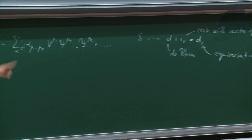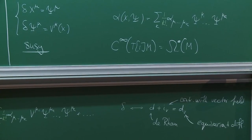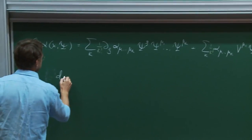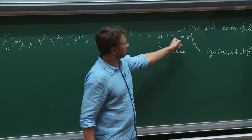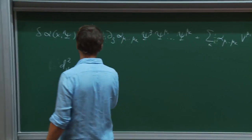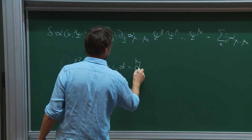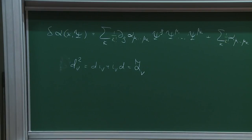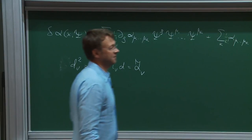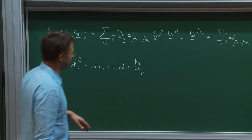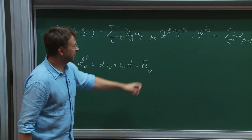One thing you can see is that D_V squared: D² is 0, i_V² is 0, and the only thing surviving is D i_V + i_V D, which is just the Lie derivative L_V. Now D acts from p-forms to (p+1)-forms, while i_V goes from p-forms to (p−1)-forms. To handle this, people quite often introduce a formal parameter ξ of degree 2, and write the equivariant differential as D + ξ i_V.